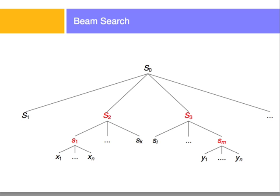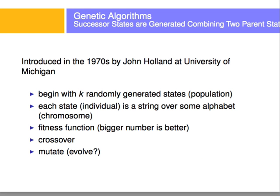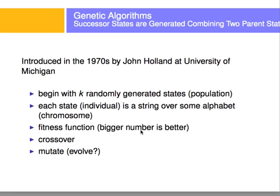This concept is very similar to the concept of genetic algorithms. Genetic algorithms were introduced in the 1970s. They begin with a set number of randomly generated states, which we call a population. Each state, which we'll call an individual, is a string over some alphabet or a chromosome. So we will represent each state — whether it's a game board, maintenance schedules, or whatever — as a string, which will be our chromosome.